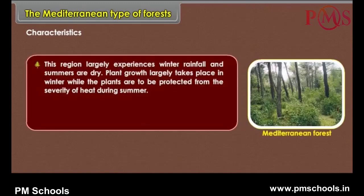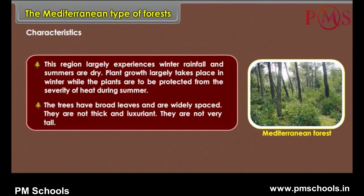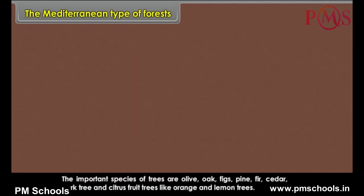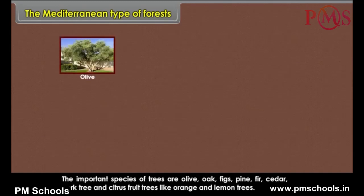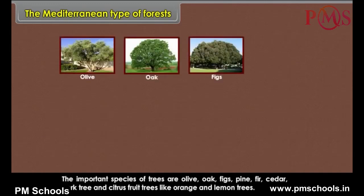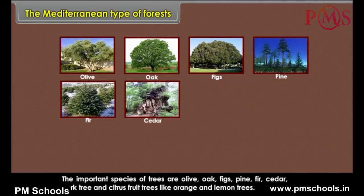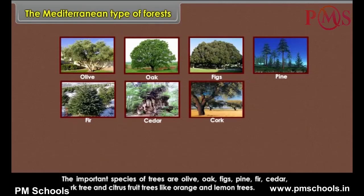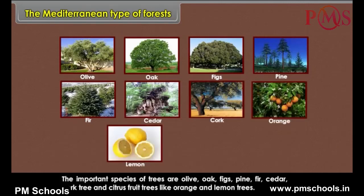Characteristics: This region largely experiences winter rainfall and summers are dry. Plant growth largely takes place in winter while the plants are to be protected from the severity of heat during summer. The trees have broad leaves and are widely spaced. They are not thick and luxuriant, and not very tall. The important species of trees are olive, oak, figs, pine, fir, cedar, cork tree and citrus fruit trees like orange and lemon trees.